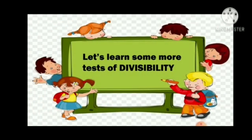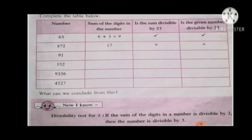Children, let's learn some more tests of divisibility. Complete the table below. You can see 4 columns here: the number, the sum of the digits in the number, whether the sum is divisible by 3, and whether the given number is divisible by 3. First number is 63 — adding the digits gives 9. Now 9 is divisible by 3, so 63 is divisible by 3.